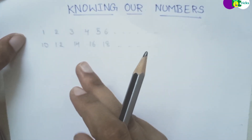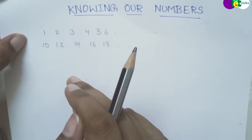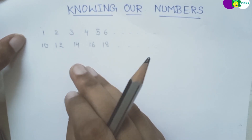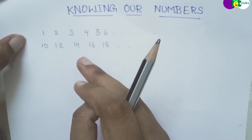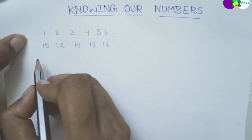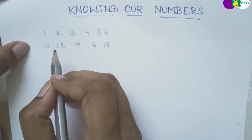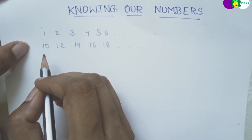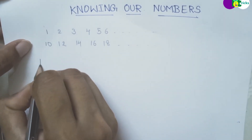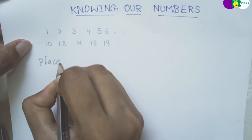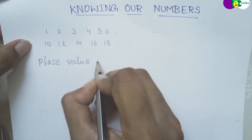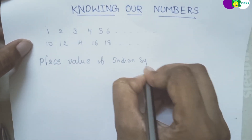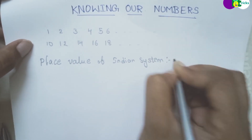We have two types of systems to discuss: the first one is the Indian system and the second is the International system. These are the systems we need to know for understanding place values of numbers. First, let's look at the place values of the Indian system.